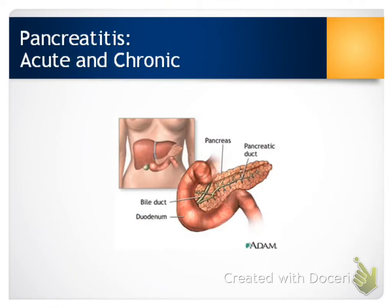Moving on to pancreatitis — we have both acute and chronic. With acute pancreatitis, it's an acute inflammation of the pancreas, often caused by some problem in the biliary tract or alcoholism. Other risk factors include smoking or high lipids. Typically, they have abdominal pain in the left upper quadrant, usually pretty severe but ranging from mild to severe. They might have nausea and vomiting, increased white blood cell count, tachycardia, hypotension, and some jaundice.